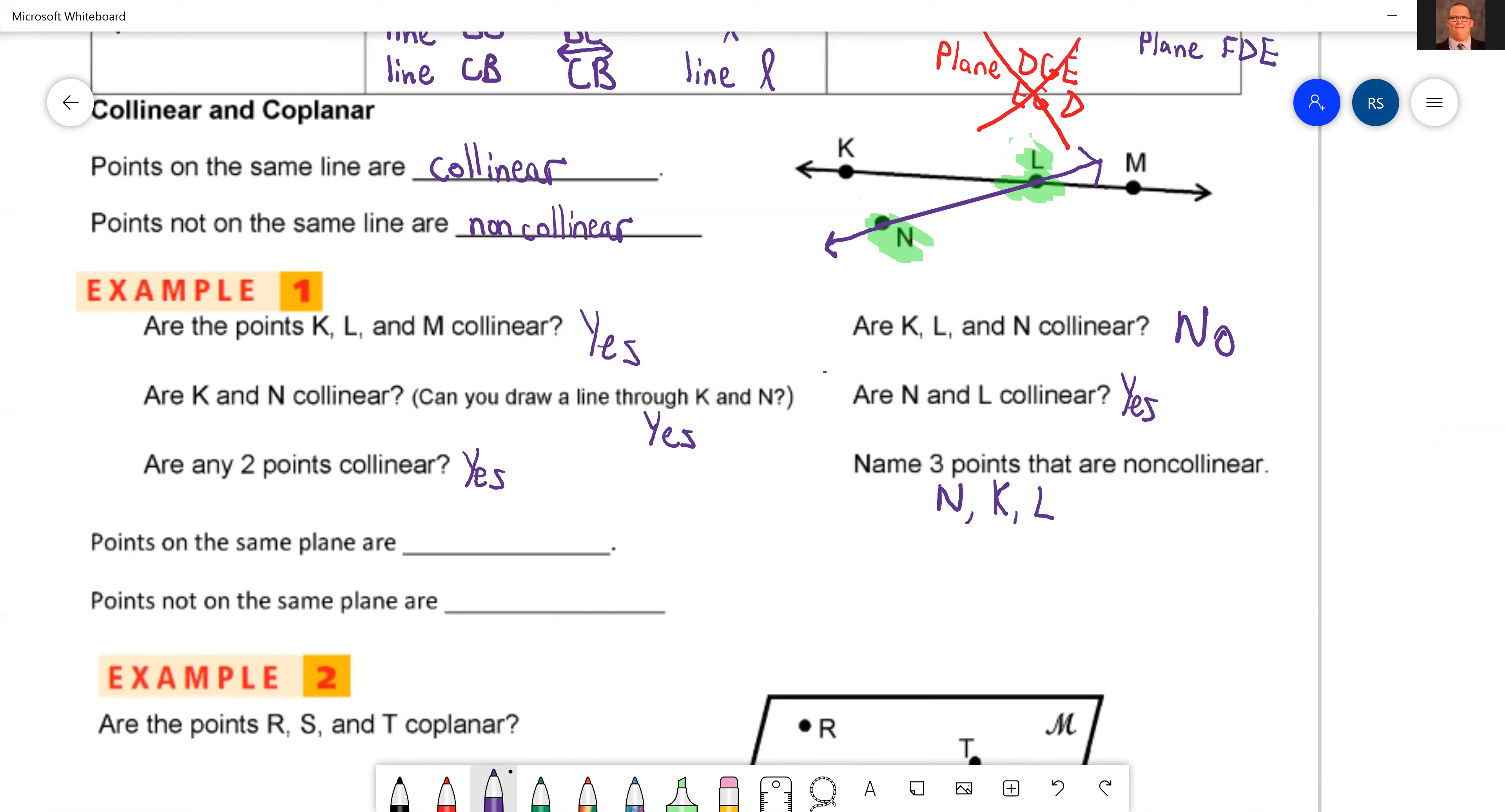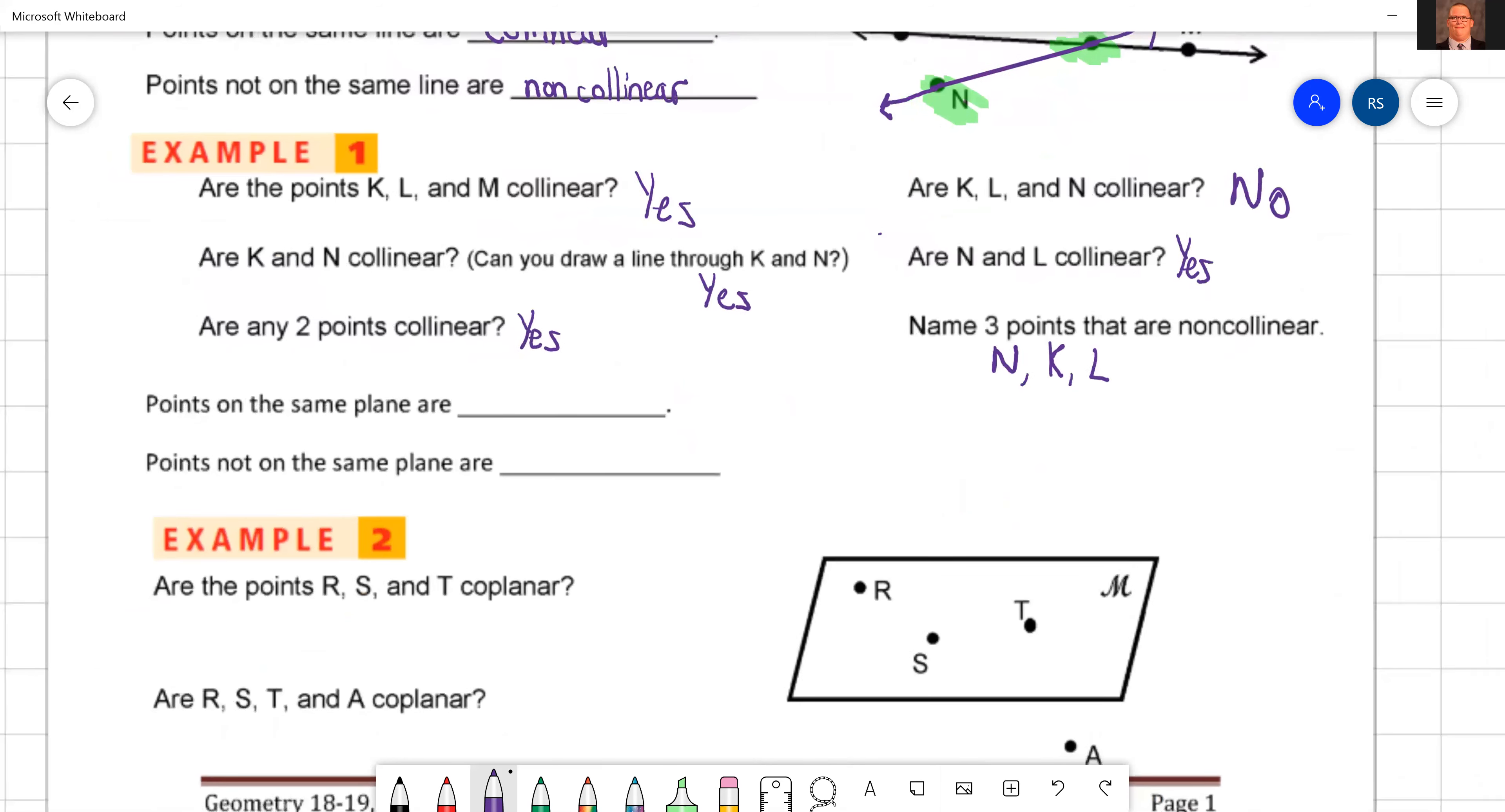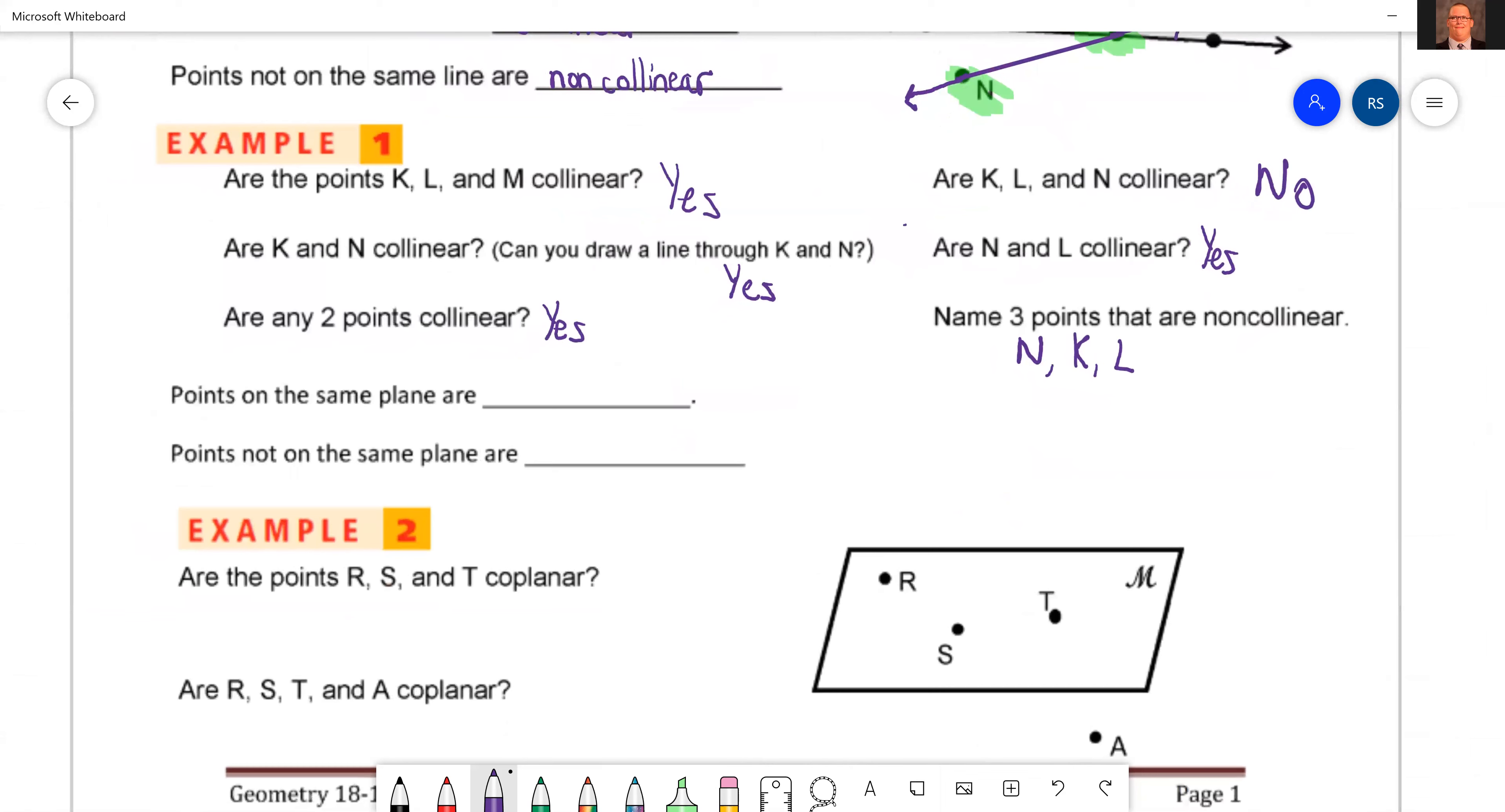Just as long as N is in there, it doesn't matter. You can say N, K, and L, N, K, and M, N, L, and M. As long as you've got N, you're Gucci. Sorry, I mean good.